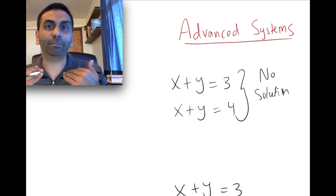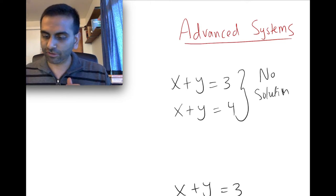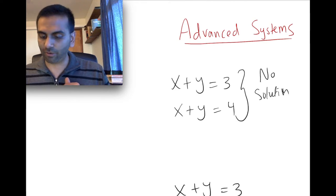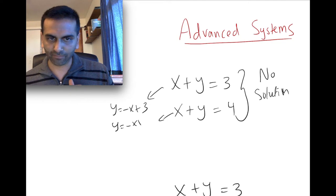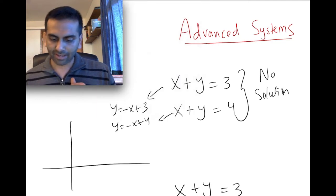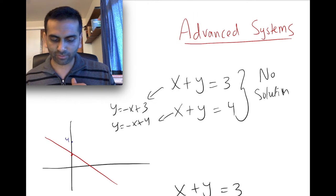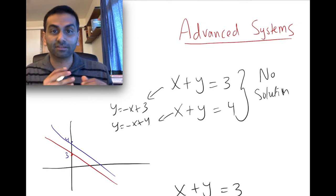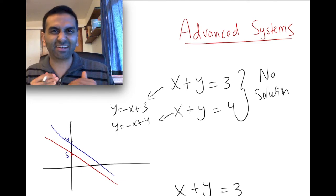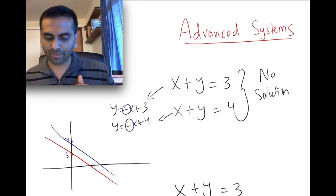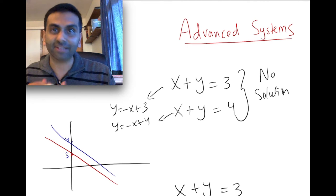Graphically, this is when two lines are parallel with a different y-intercept. If we convert both equations into slope-intercept form, the first equation is y equals negative x plus 3, and the second is y equals negative x plus 4. One has a y-intercept of 3 and slope of negative 1; the other has a y-intercept of 4 and slope of negative 1. They're parallel — same slope, different intercept — so they'll never intersect and there's no solution.